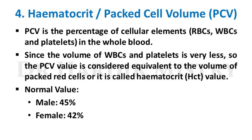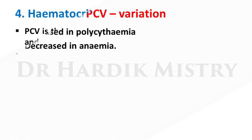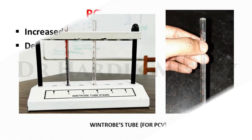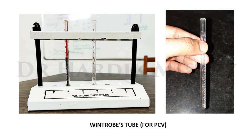Hematocrit or packed cell volume (PCV) is the percentage of cellular elements — RBCs, WBCs, and platelets — in the whole blood. Since the volume of WBCs and platelets is very less, PCV is considered equivalent to the volume of packed red cells. Normal values: male 45%, female 42%. PCV is increased in polycythemia and decreased in anemia. This is the Wintrobe tube used for PCV, which is closed at one end and open at the other.